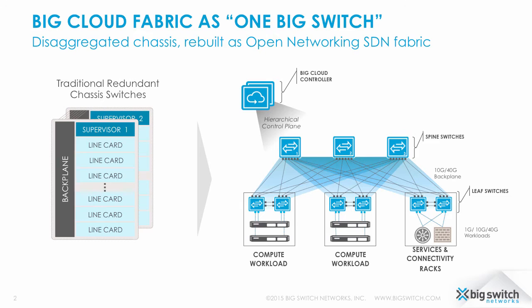Inspired by hyperscale principles, Big Cloud Fabric disaggregates this traditional model, distributing the switch ports to the top of every rack in the data center and consolidating the control plane. The result is an externally controlled, hierarchical, and distributed architecture operated as one big switch — a concept so fundamental, we named our company for it.